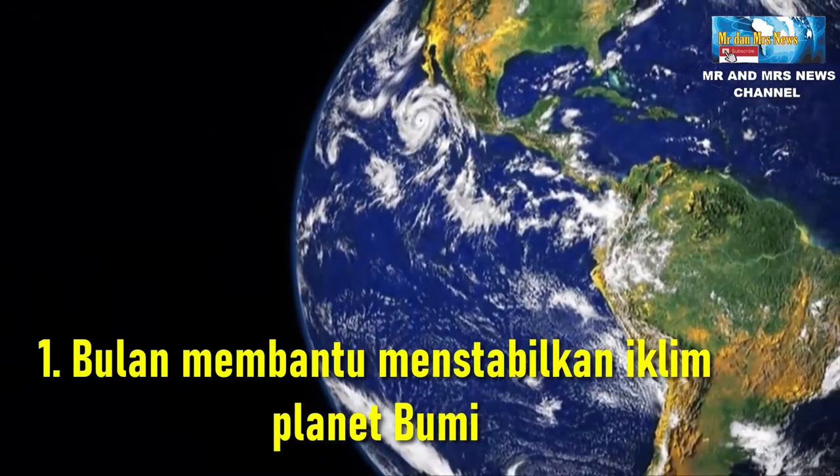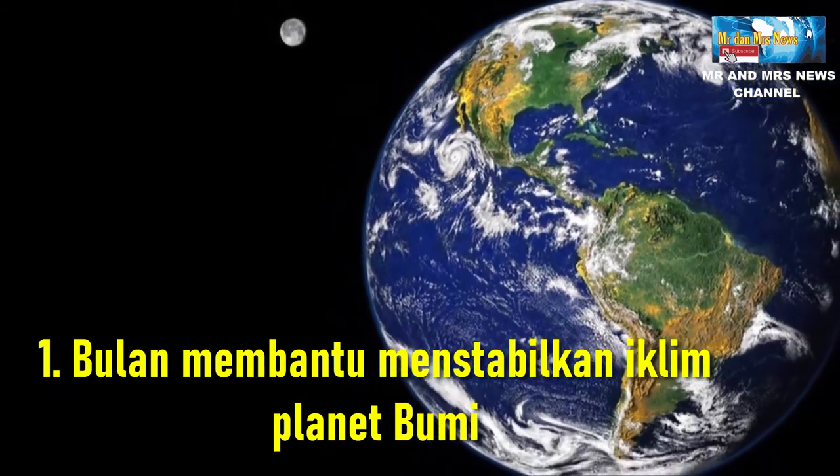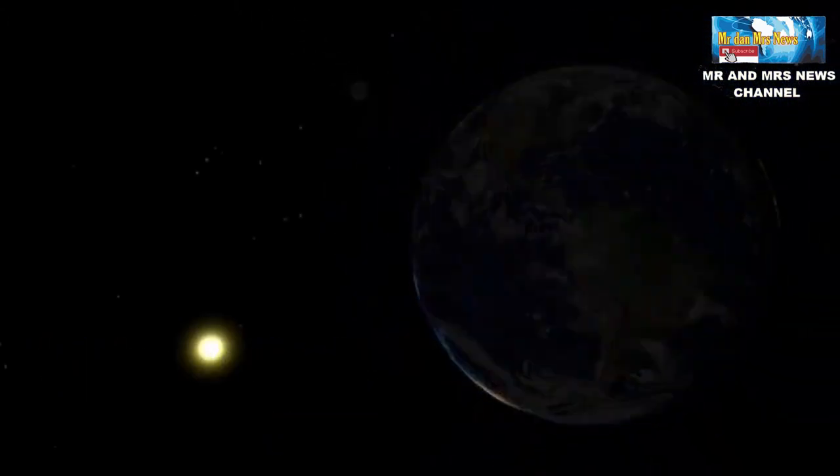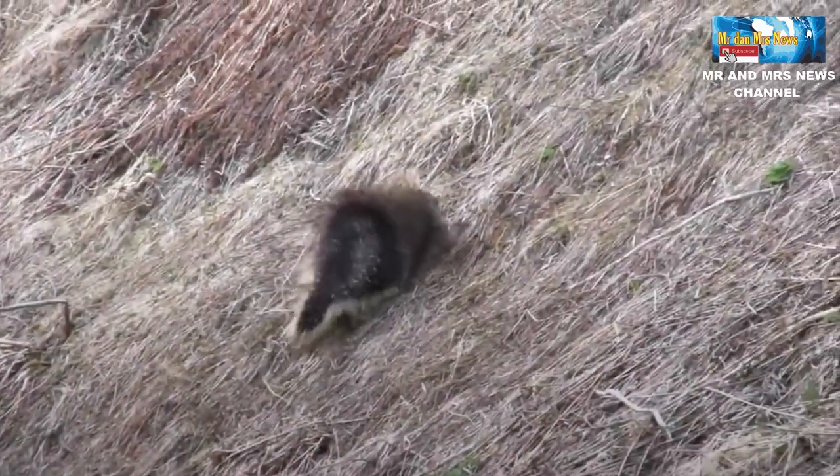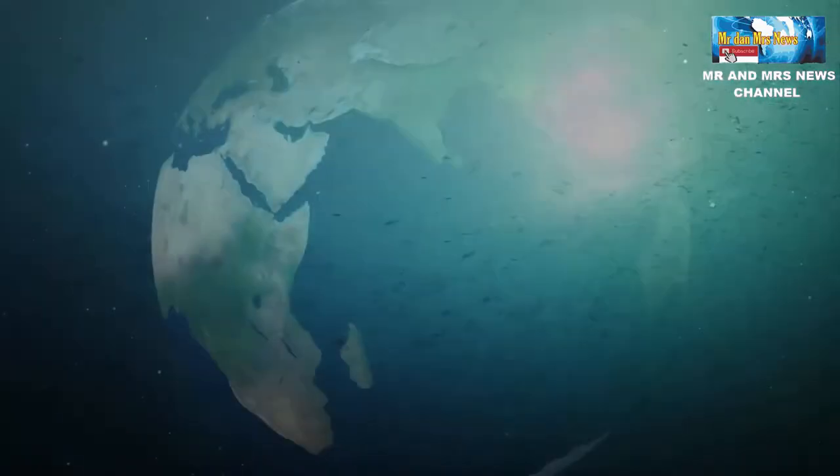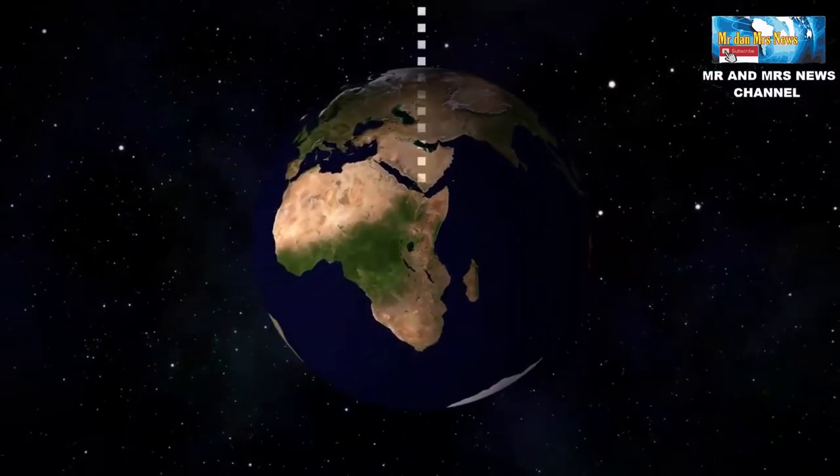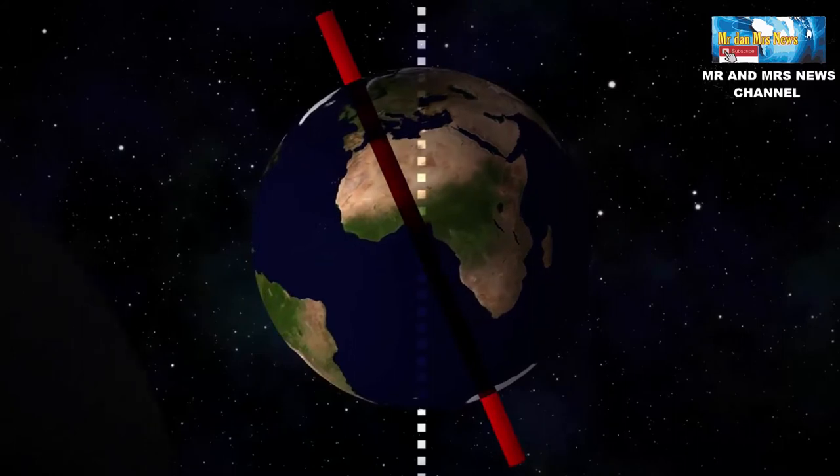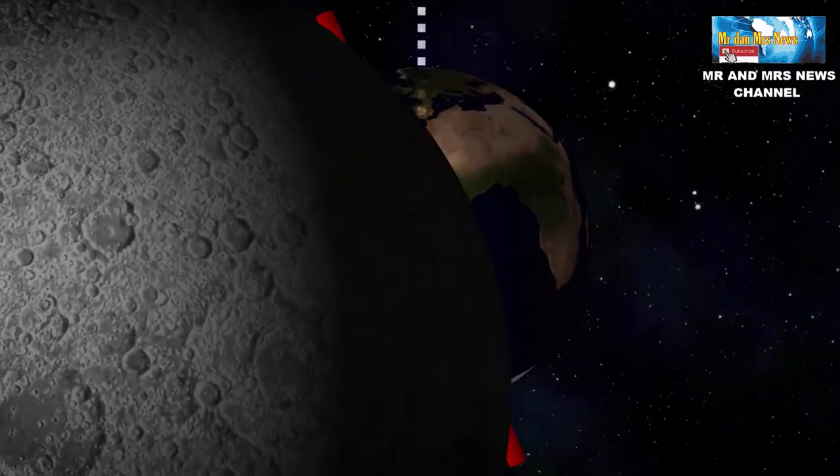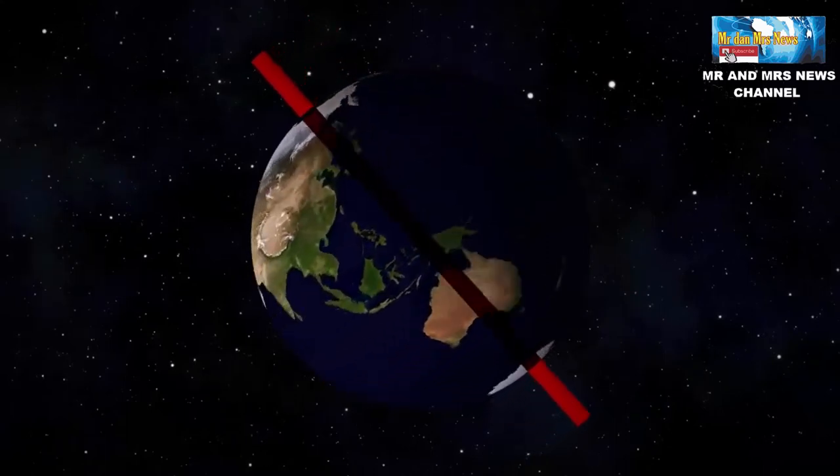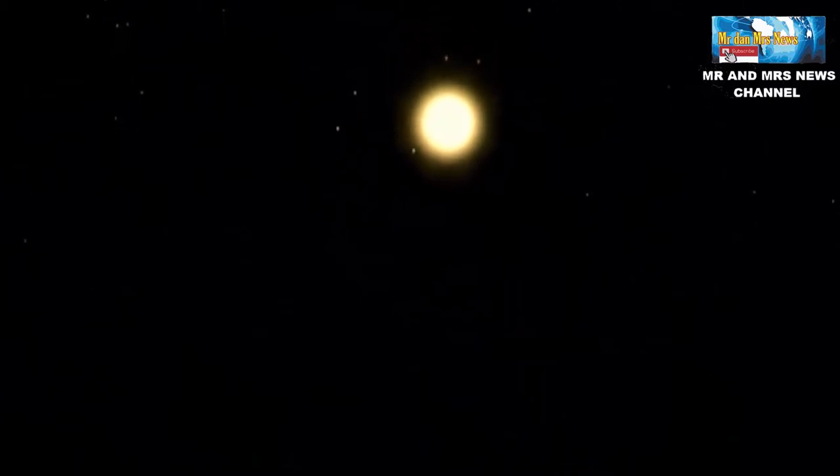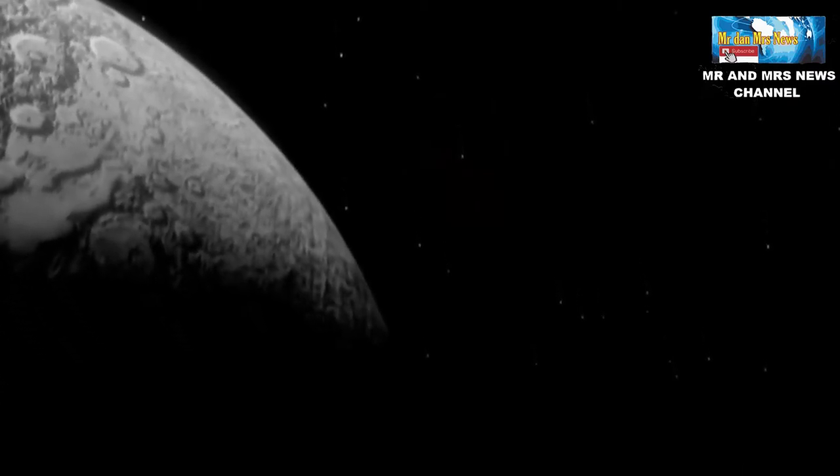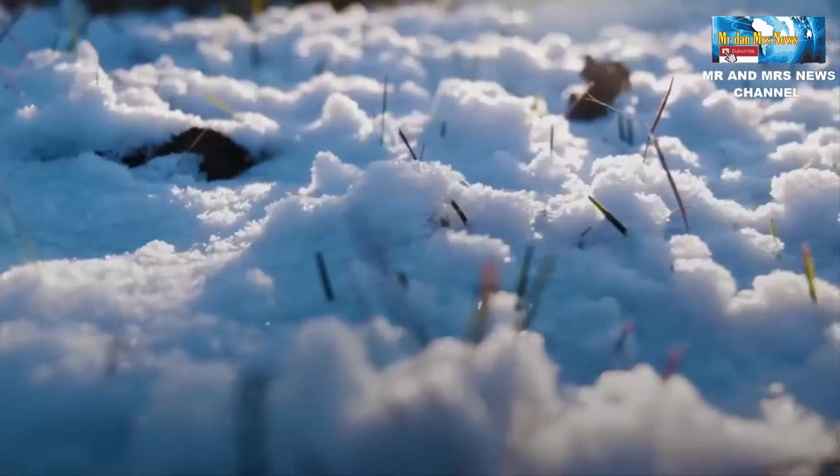Yang pertama, bulan membantu menstabilkan iklim planet bumi. Bulan memiliki peranan penting bagi perubahan iklim di bumi. Perubahan iklim ini terjadi karena bulan membatasi rotasi bumi. Bila rotasi bumi tidak dibatasi bulan, maka pergerakan akan terlalu cepat. Rotasi yang terlalu cepat akan membuat suhu bumi menurun drastis. Hal itu terjadi karena matahari tidak memiliki cukup waktu untuk menghangatkan bumi. Perbedaan iklim yang terjadi tanpa adanya bulan akan membatasi pergerakan spesies di seluruh bumi. Bahkan, sejumlah tanaman dan hewan yang hidup saat ini mungkin akan punah.